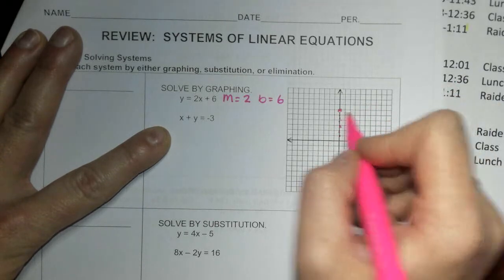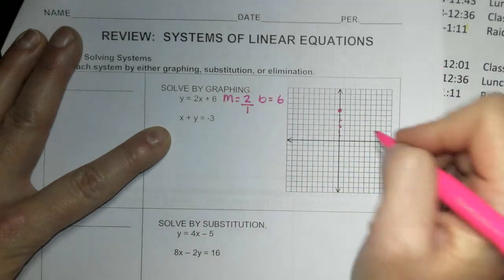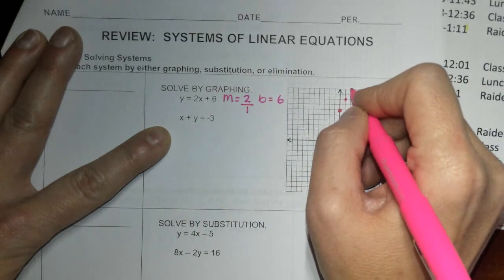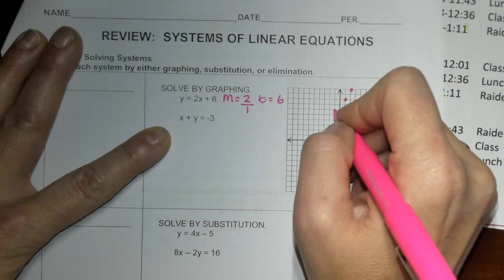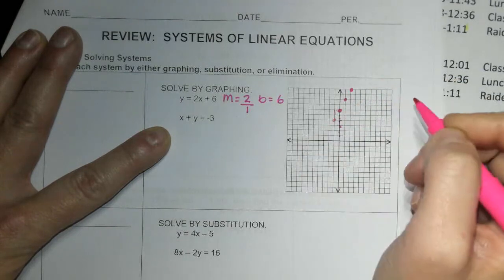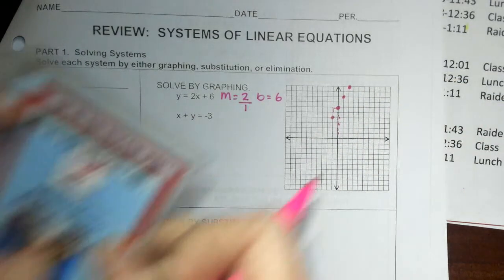Go up to 6, put a dot, and then my slope is 2, so I'm going to go up 2 and over 1 and I'm going to draw my line.